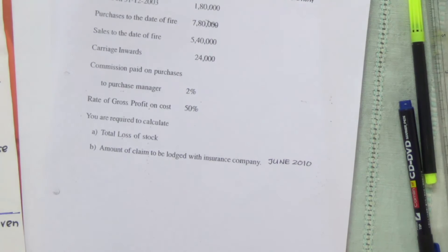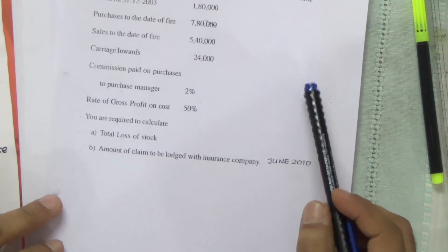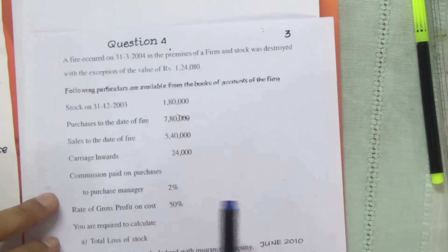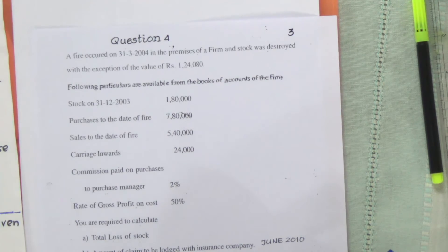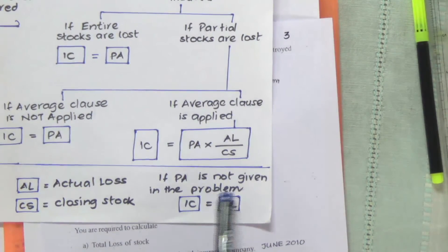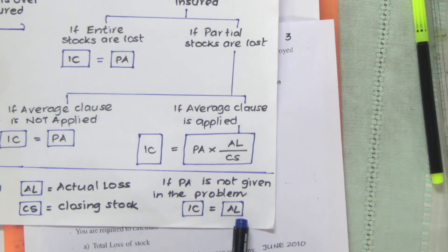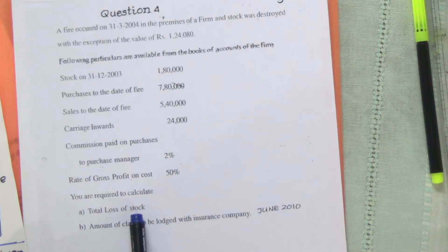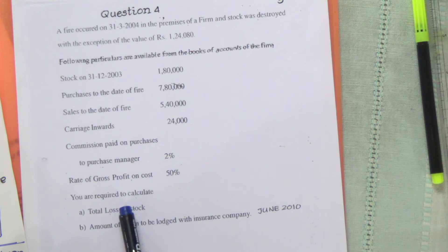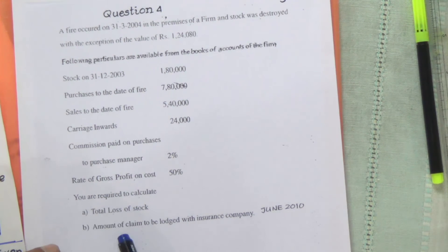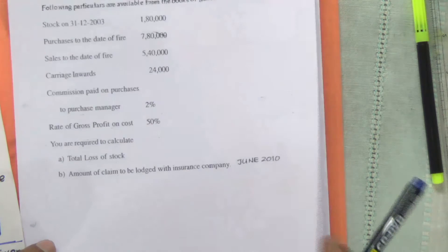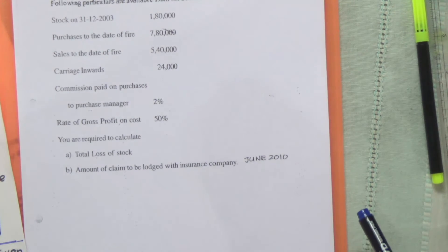In this problem, the policy amount is nowhere mentioned. Average loss is also not given. So again, we go back to our rule: if policy amount is not given in the problem, insurance claim equals actual loss. All we have to do is find the actual loss, and that itself will be the amount of claim to be lodged. So the answer to A and B will be the same. But we'll do it methodically and apply the memorandum trading account format. Total loss of stock is the first thing we need to find out.